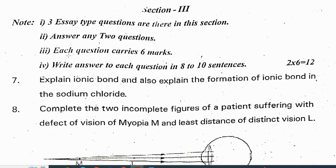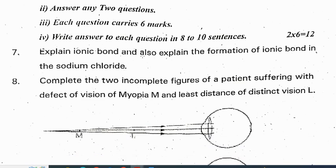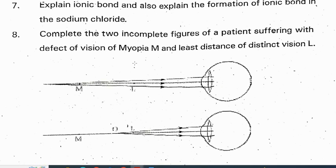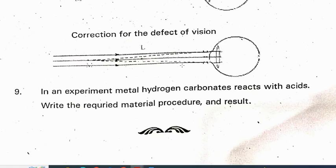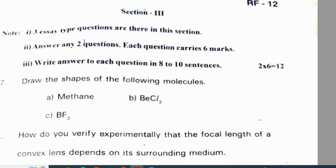Section 3 of the Hyderabad pre-final 2 question paper: Explain the ionic bond and the formation of ionic bond in sodium chloride. Complete the two incomplete figures — myopia and distinct vision pictures are there. In an experiment, metal hydrogen carbonate reacts with acid — write the required material, procedure and result.